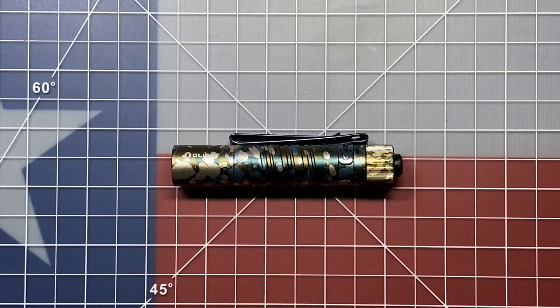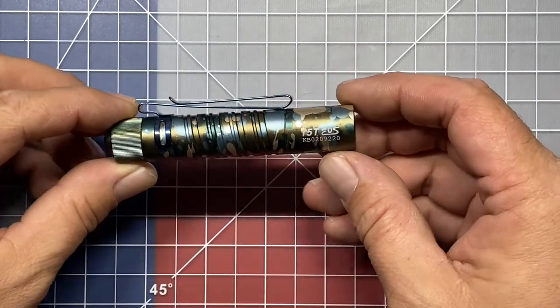Welcome back to the Tool Crib. Today we are going to be looking at an AA flashlight. This is from Olight. It is the i5T EOS.